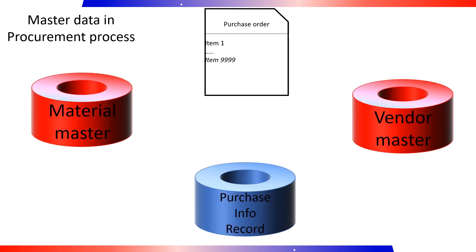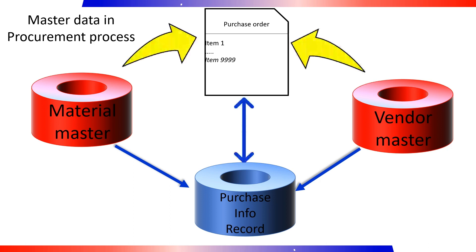Master Data comprises data records that are stored in the database for a long period of time. These data records are stored in a central location and are used and processed on a cross-application basis, which avoids multiple storage and redundancy of data. Vendor Master, Material Master, and Purchase Info Record are important master data in SAP MM. The Purchasing Info Record is a connection between vendors and materials, which reduces the effort required to enter data. When purchasing documents are created, data is transferred by default from existing master records to the purchasing documents.